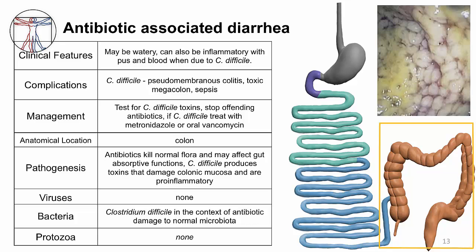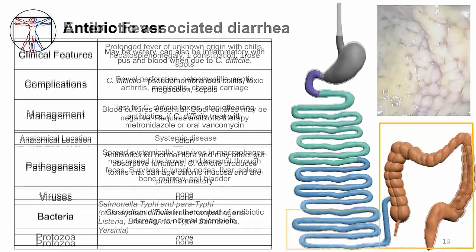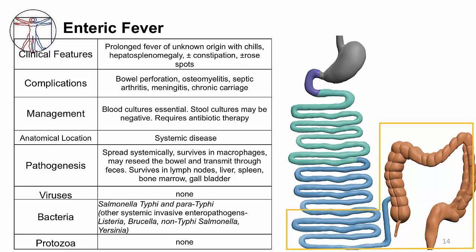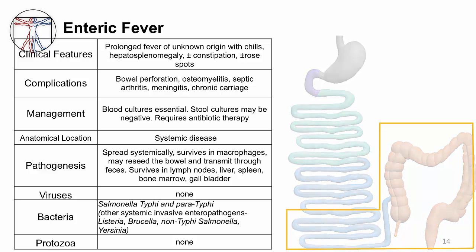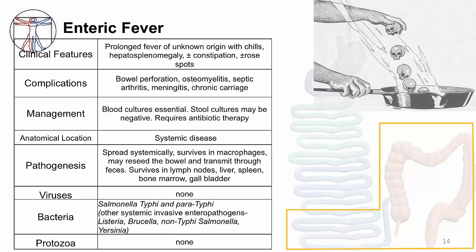Pseudomembranous colitis can progress to bowel perforation and sepsis. The next clinical syndrome is enteric fever, usually caused by Salmonella typhi or Salmonella paratyphi. These are similar to the salmonella that cause inflammatory gastroenteritis, but Salmonella typhi has taken the infection a step further — it goes out of the gut and into systemic sites. Enteric fever does not typically present with diarrhea; patients may even have constipation. It presents with fever without an obvious focus of infection that gets worse without treatment and needs to be treated with antibiotics. There are no viruses or protozoa that cause this syndrome.